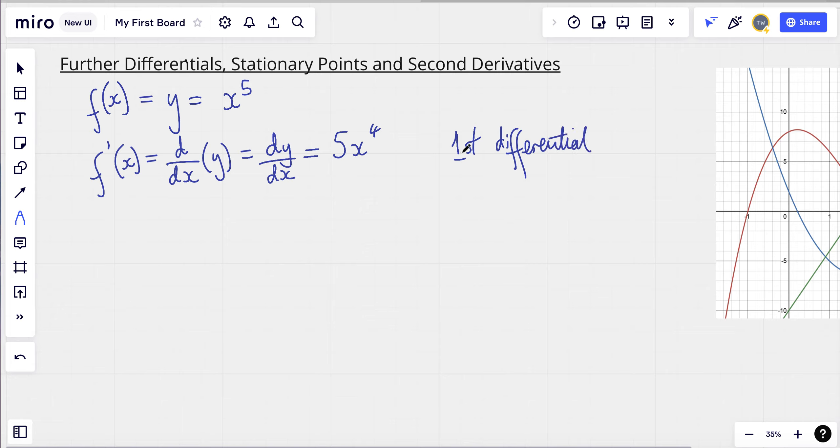Now, for what we've been using so far, this has been used as a gradient function. So the second differential would be f double dashed x, sometimes known as double prime. And this would be d by dx of d by dx of y, so I'm differentiating my differentiated version of y. This would give me d squared y over dx squared, which is a bit of a weird notation, but it's just the way it is. This gives us 20x to the power of 3, because I've used my power rule again. And this is my second differential.